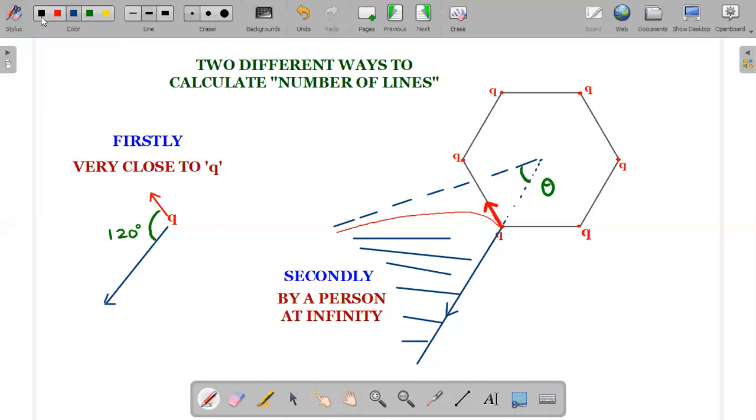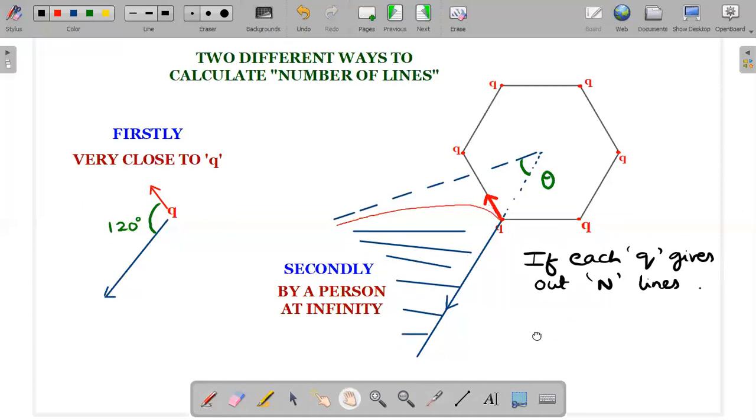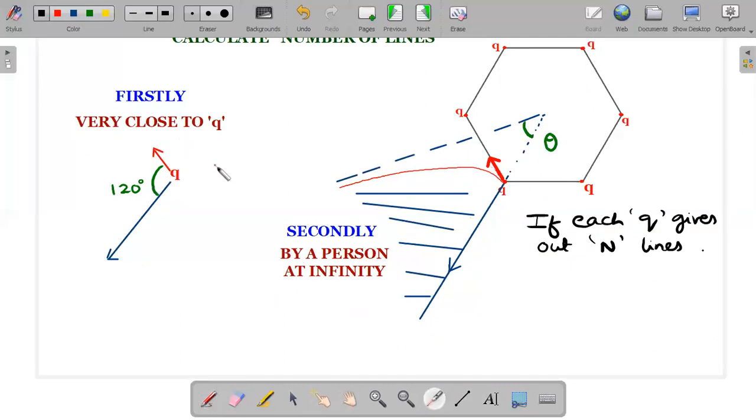The idea is, if each charge q gives out N number of lines in all directions, we're talking about only planar diagram. Capital N number of lines. Then this capital N would come in all 360 degree direction in this particular plane. I keep repeating, it's only a planar assumption. So in 360 degree direction, if capital N number of lines come, in 120 degree direction, case one calculation, there would be N times 120 degrees divided by 360 degrees. That would be the one that would be calculated in case one.